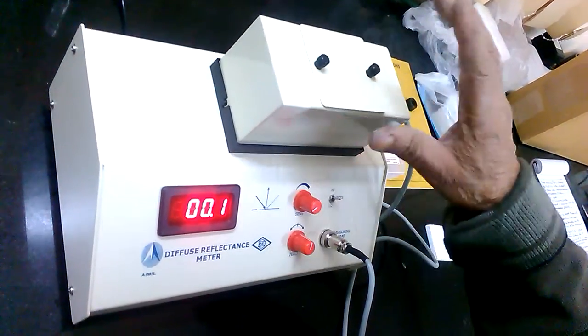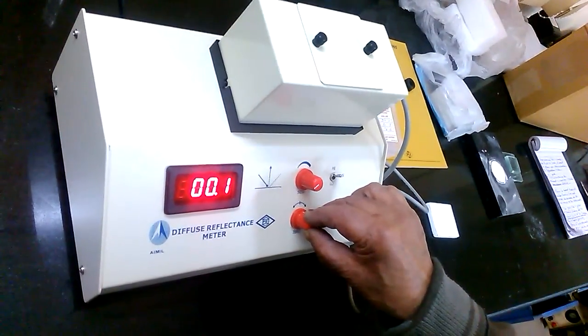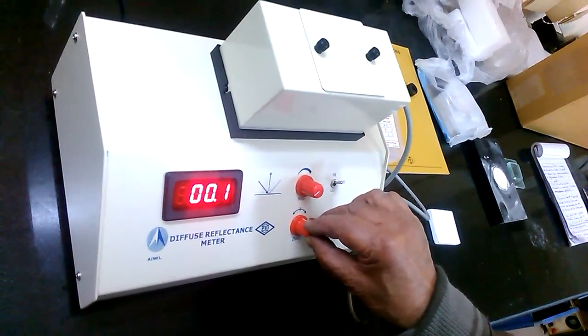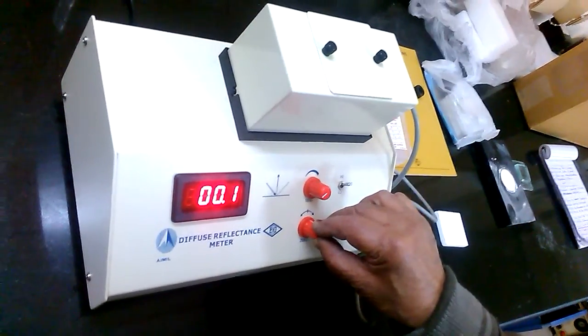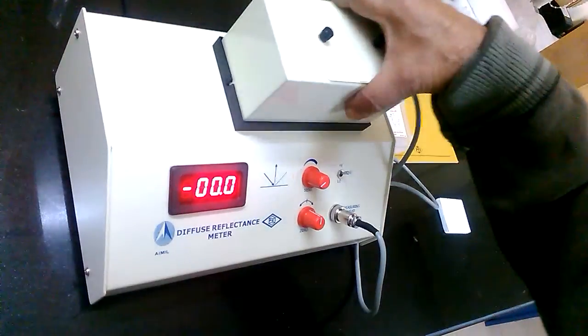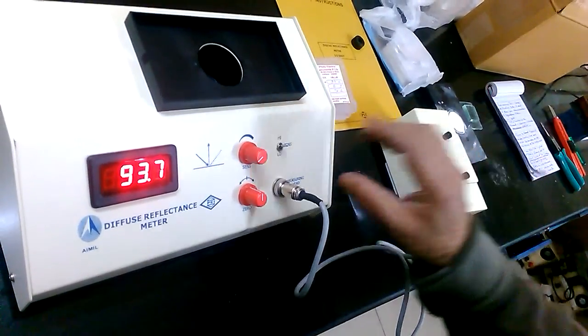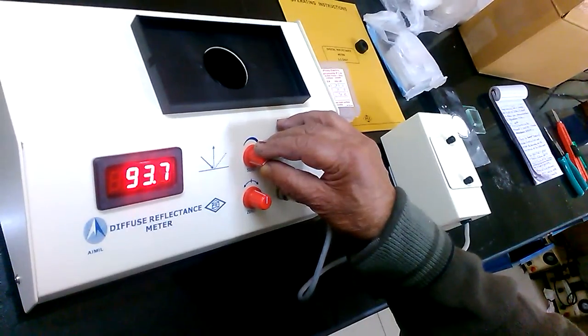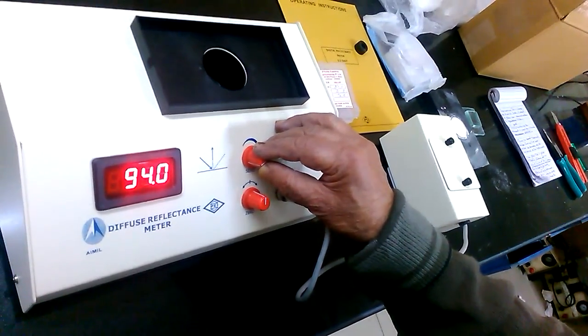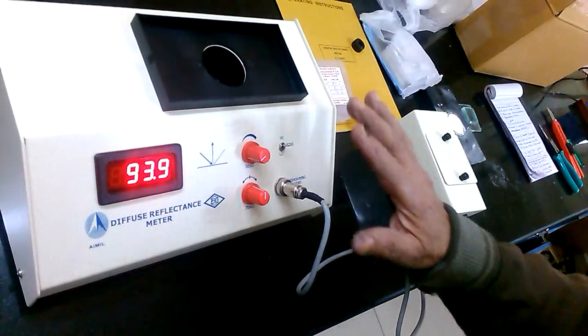In case it is not zero, set it again with the help of zero sensitivity knob. And then check again on MG block the reading is 94 or not. In case it is not 94, set it again 94. Now your instrument is calibrated.